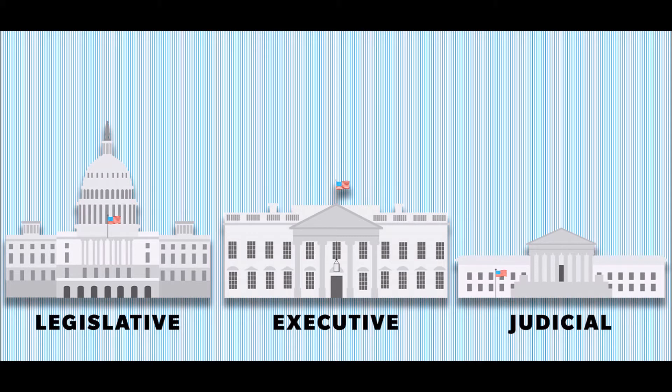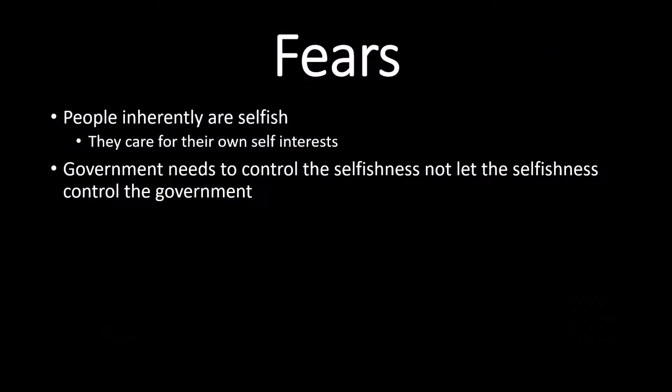So why do we have separation of powers? Madison had some fears over human nature and government. He understood that humans naturally care about their self-interest. That means that if only a few people control the government, then it is prone to misuse, which could threaten the lives of the majority of citizens.